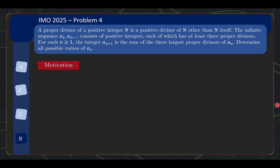Let's do some exploration first, because if I were to go into the answer directly, you will see later that the answer looks quite weird — you would never have thought of it out of thin air. So let's take a look at some motivation. The first thing to think is: how do you construct the next number? To find the 3 largest proper divisors, basically if you have n, you can look at the collection n/2, n/3, n/4, and so on.